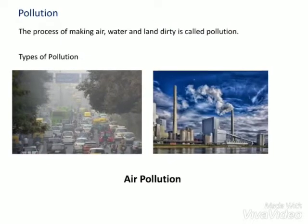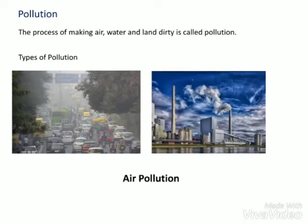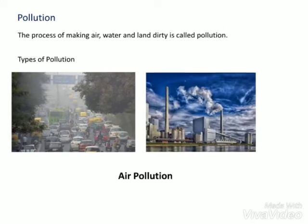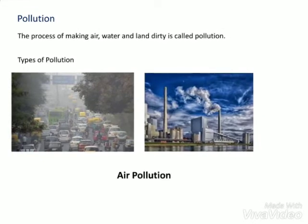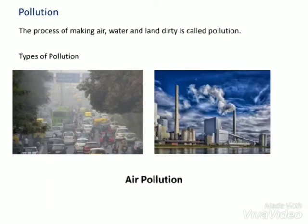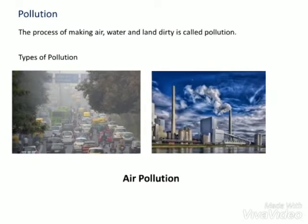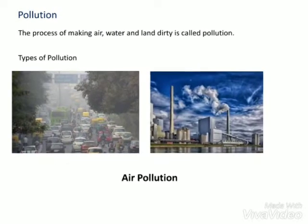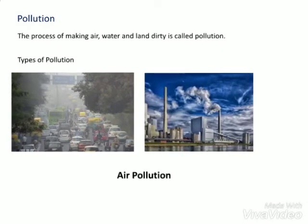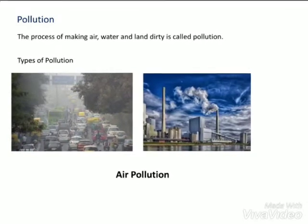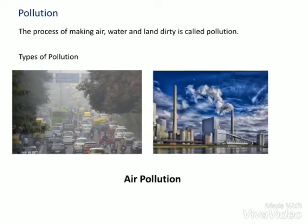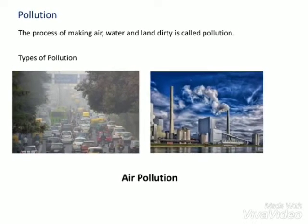We are going to learn the different types of pollution: air pollution, water pollution and land pollution. Let us start with air pollution. When the air has too much of gases like carbon dioxide, or contains particles of dust or other material, we say that it is polluted.